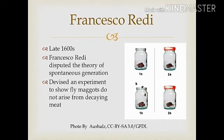Supporters of the spontaneous generation theory disputed Redi's experiment, claiming that by sealing the jars with lids, he prevented those vital forces needed for life. Therefore, Redi revised his experiment, this time adding a third set of jars in which he sealed them with netting, similar to gauze. The next day, he found very similar results. The jars with open lids exposed to the flies had maggots on the decaying meat, while those with sealed lids and those with the netting or gauze did not. Thus, he believed he had disproved spontaneous generation.